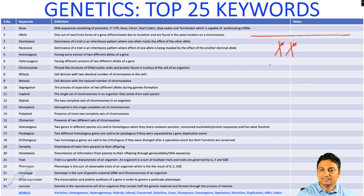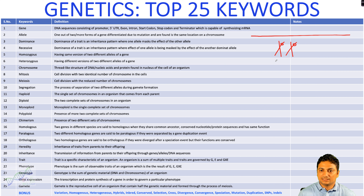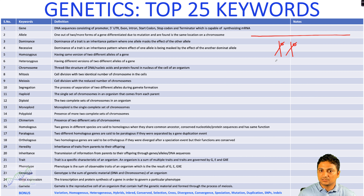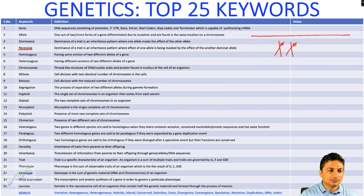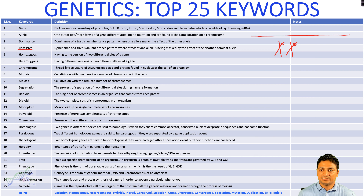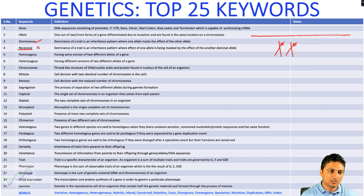Dominance is a trait. When we cross two different parents, one character is going to be masked by the other. Dominance is a trait in an inheritance pattern where one allele masks the effect of the other allele. The allele that masks is called the dominant allele. If an allele is masked by another dominant allele, it is called a recessive allele — it will not show its phenotype, which will be masked by the dominant allele.